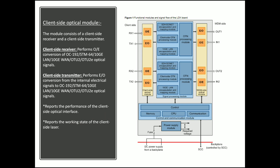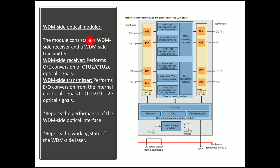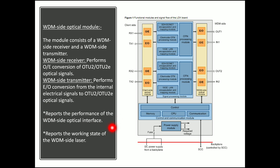Next is the WDM side optical module. This module consists of the WDM side receiver and WDM side transmitter. The WDM side receiver performs optical-to-electrical conversion of OTU2 optical signals. The WDM side transmitter performs electrical-to-optical conversion from internal electrical signals to OTU2 optical signals at the standard WDM or ITU-T standard wavelength.